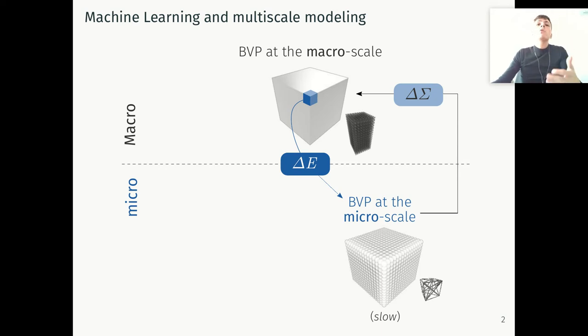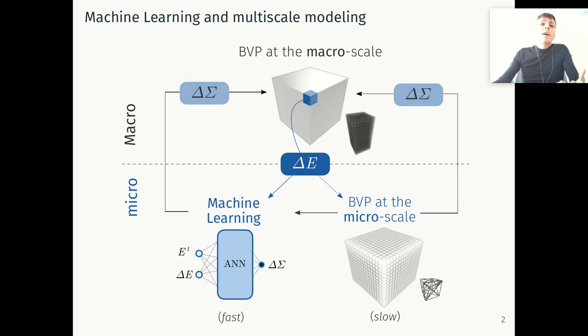However, with the explosion of machine learning, we can think of having a machine learning network that will retrieve for us the constitutive link between strain and stresses. If this succeeds, we'll be able to replace the time-consuming resolution of the auxiliary boundary value problem with an artificial neural network that will be much faster. This is the main motivation of this work, yet there is a problem: artificial neural networks offer high interpolation spaces, but nothing guarantees that the predictions will satisfy basic laws of physics like the laws of thermodynamics.